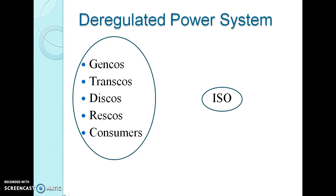The Transco is paid for the use of its lines. In some countries, the Transco itself will act as the system operator. Then, the Distribution Company — Disco — is a monopoly franchise owner-operator of the local power delivery system, which delivers power to individual businesses and homeowners. In some places, the local distribution function is combined with the retail function — that is, to buy wholesale electricity either through the spot market or through direct contracts with GenCos, and supply electricity to the end-user customer.